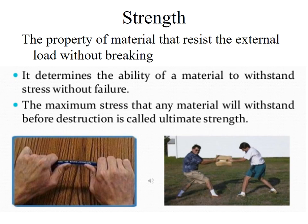The next property is strength. Strength means the ability of a material to withstand stress without failure. In this picture, you can see that if you have a flexible ballpoint and apply force on it, it will not break — it resists the external force without breaking. The maximum stress that any material can withstand before destruction is called ultimate strength.